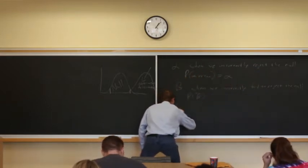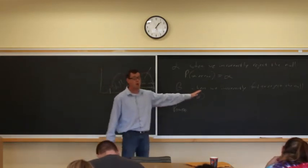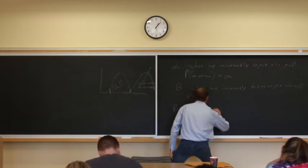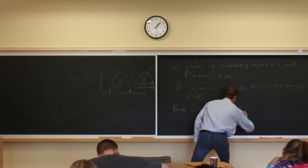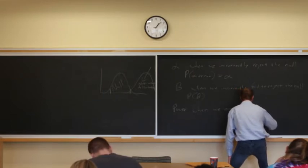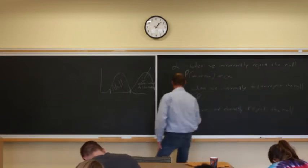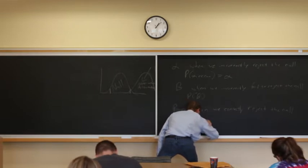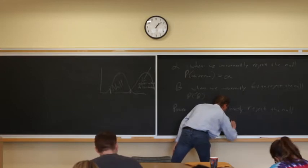Now power - power isn't when we do something wrong. Specifically, power is when we correctly reject the null. And the probability of power is just equal to one minus the probability of making a beta error.